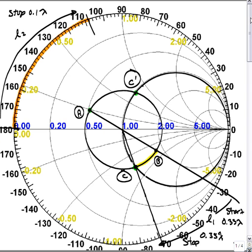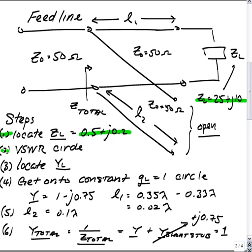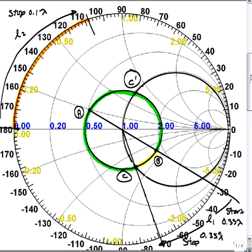The next step is to locate our VSWR circle which is this circle right here that I'm going to highlight. And after that we're going to locate our normalized load admittance. And that normalized load admittance is simply on the other side of the VSWR circle directly across from point A. So that's given by this point B.